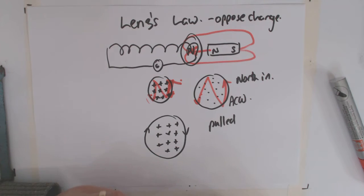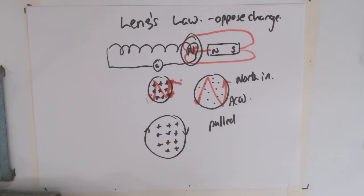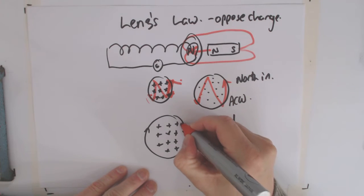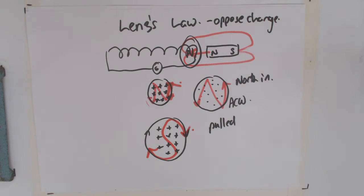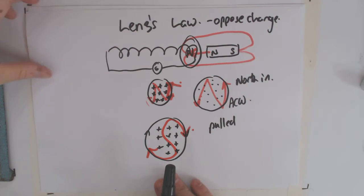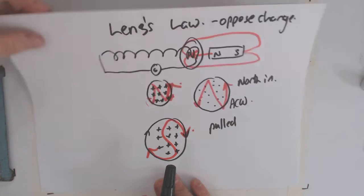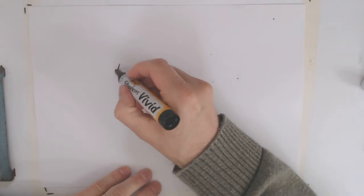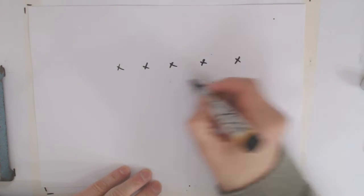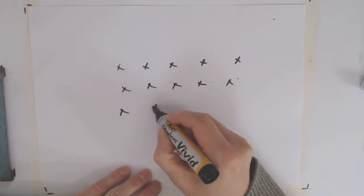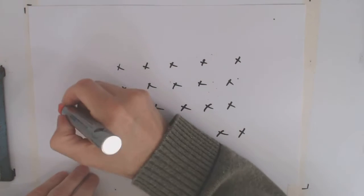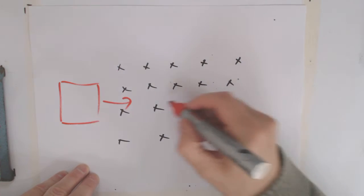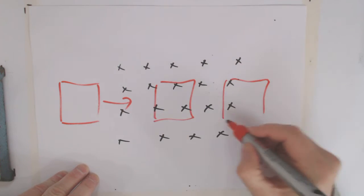So Lenz's Law is always working to oppose whatever change is taking place. There's another way you can look at Lenz's Law, and this is also something you may have seen at level 2, which is where you've again got a field and a square conducting loop coming along — going into the field, getting in the field, and then getting out of the field.